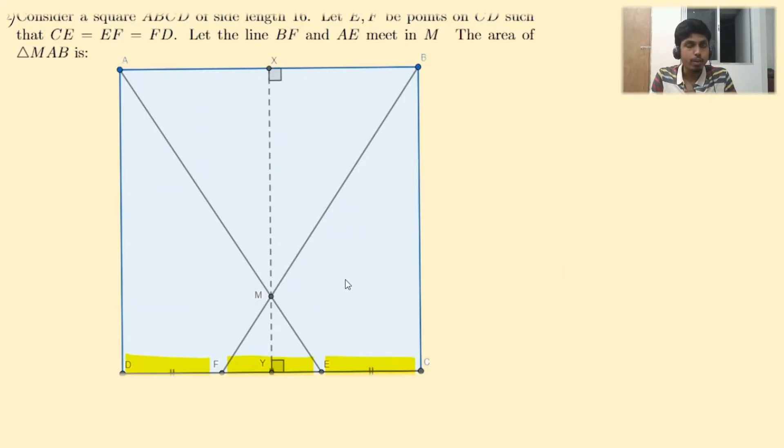Because if E is farther away from C, then F would be even farther away from the current position, and hence it won't be equal to FD. So we join AE and BF. Let it intersect at the point M. Find the area of triangle MAB.